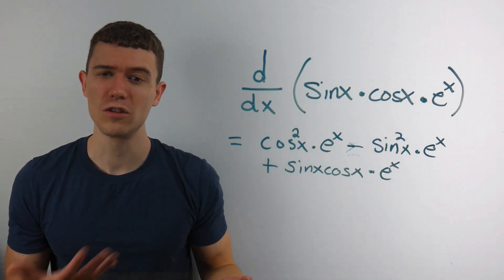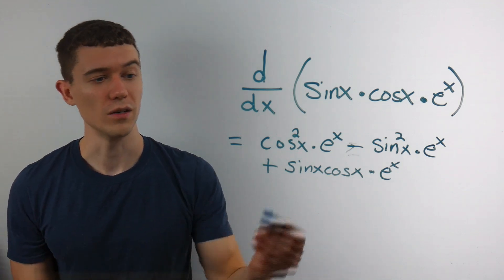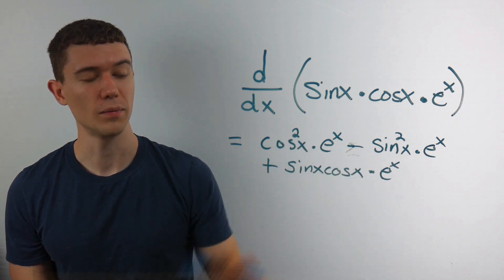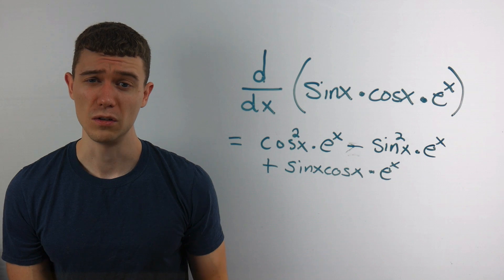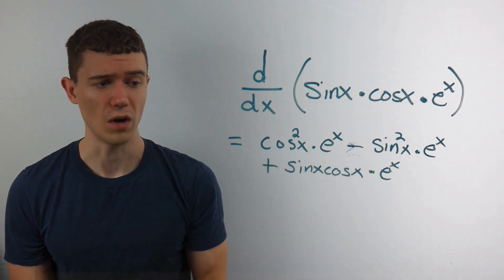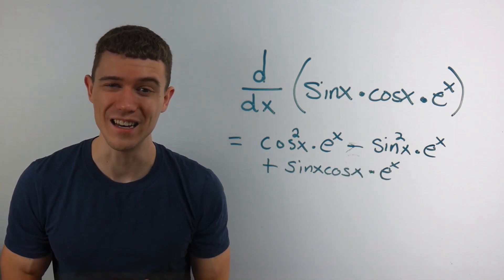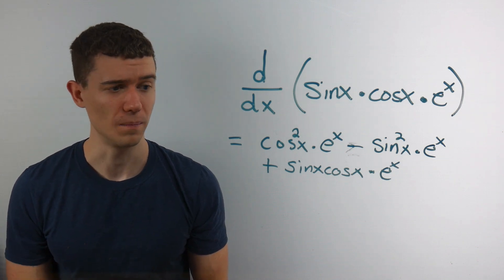That's really the way that this triple product rule works. You take the derivative of the first and you multiply it by the other two. You take the derivative of the second, you multiply by the other two, and then you add on the derivative of the third multiplied by the other two. It's exactly the same as the regular product rule.